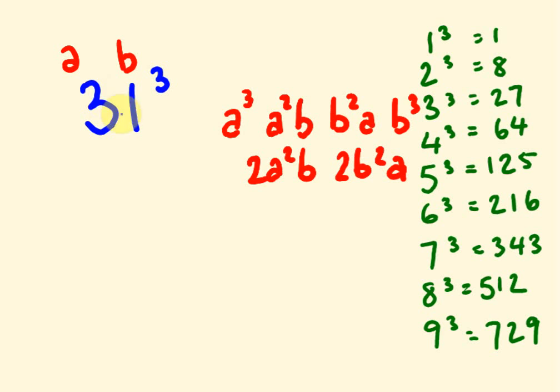So first off, A cubed. A is 3, so 3 cubed is 27. I'll put it over here. A squared times B. A squared is 9 times B, B is 1, so 9 times 1 is 9. The next one, B squared, 1 squared is 1 times A is 3. And then we end up with B cubed. B cubed here, 1 times 1 times 1, we end up with a 1 there.